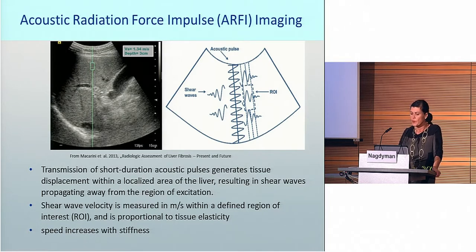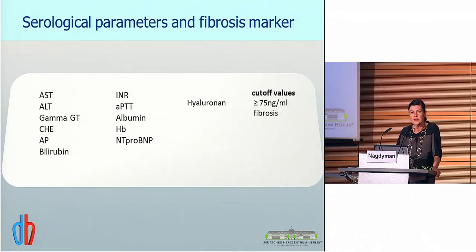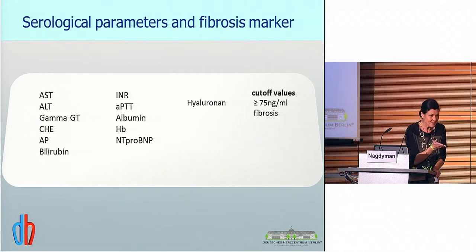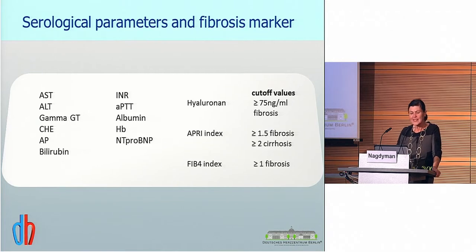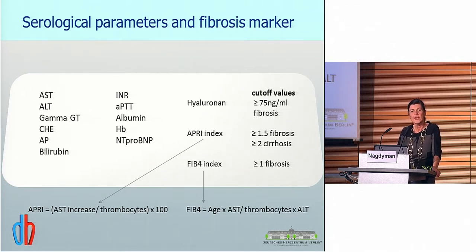The ARFI shear wave velocity is measured in meters per second and reflects the stiffness of the liver, just as the FibroScan does — speed increasing with stiffness. We also looked at serological parameters we deal with daily, including specific markers indicating extracellular matrix synthesis such as hyaluronan, as well as fibrosis indices: the APRI index — AST increase divided by thrombocytes — and the FIB-4 index, which also incorporates the age of the patient.